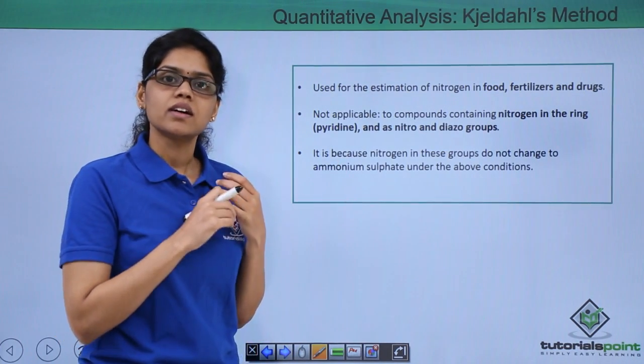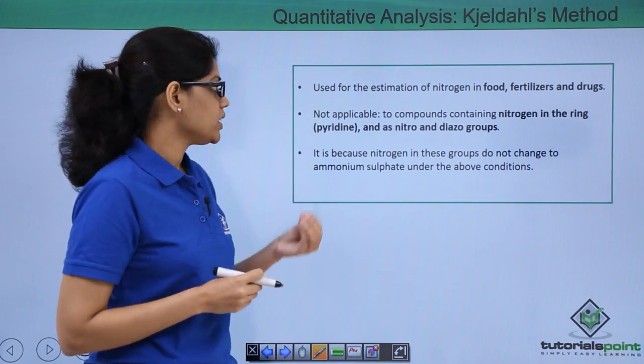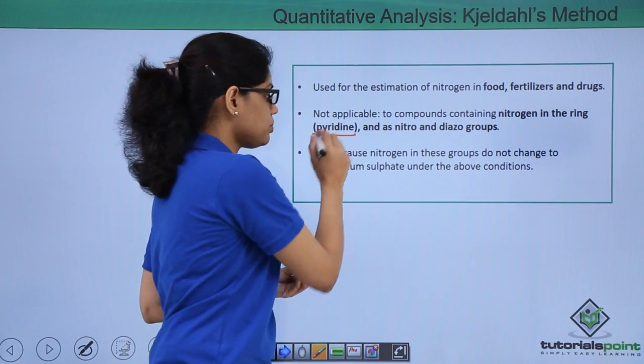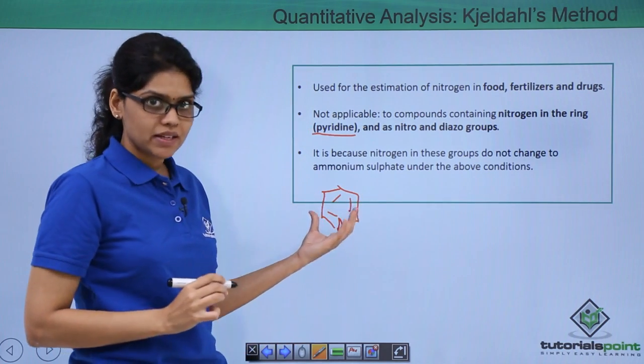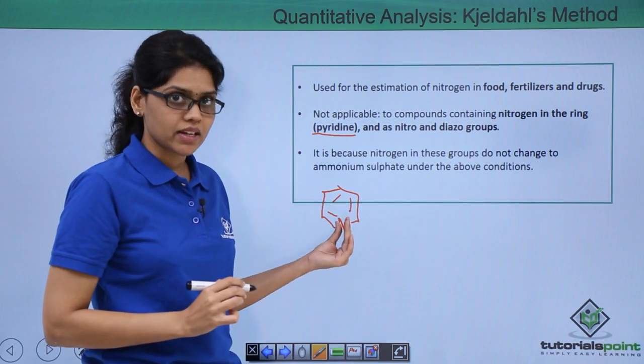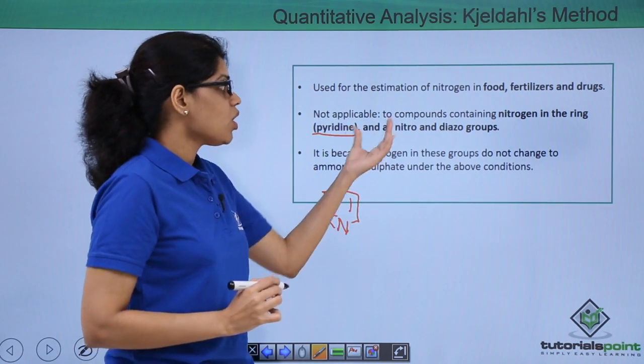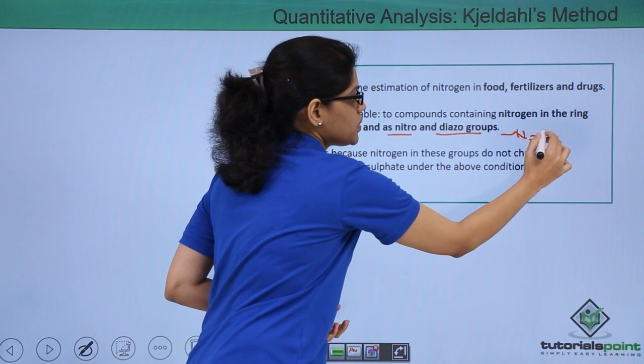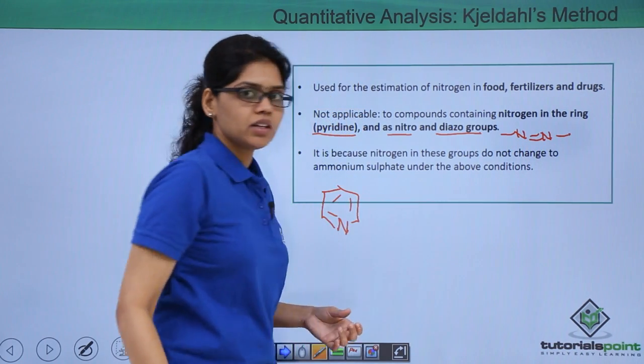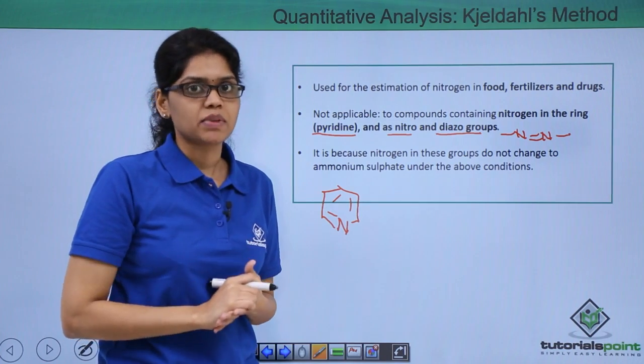It is important to note that this method is not used for every compound. If nitrogen is present in our organic compound as a ring or pyridine—the structure of pyridine is similar to benzene with one carbon replaced by nitrogen—or when nitrogen is present as nitro or diazo groups (diazo is the N double bond N group), in these cases this method fails.